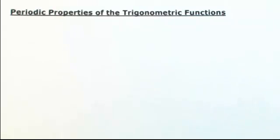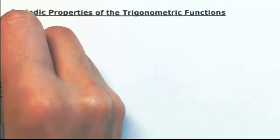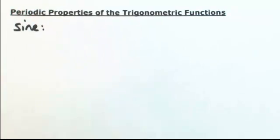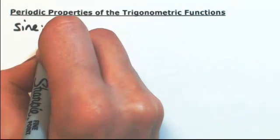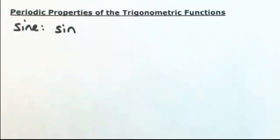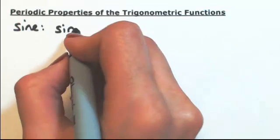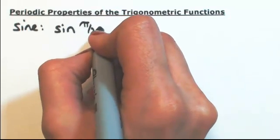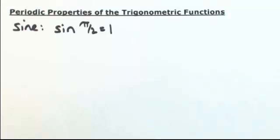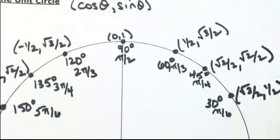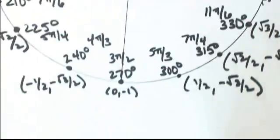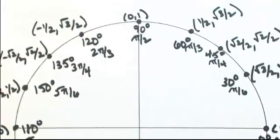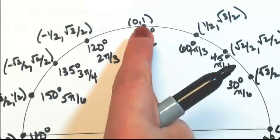Let's look at the periodic properties of our trig functions. Let's start with sine. I'm going to look for the place where the sine is going to be 1 — the angle where the sine is 1. That's going to be at the top of the circle, so sine of pi over 2 is 1. Now since that's at the top of the circle, there's not going to be any other place within one revolution where the y-coordinate is going to be 1 again, because that's the highest spot that there is.